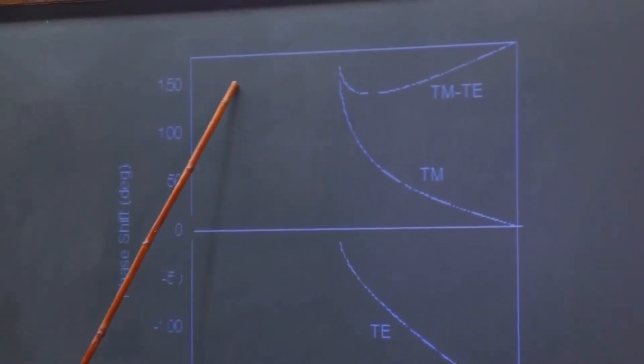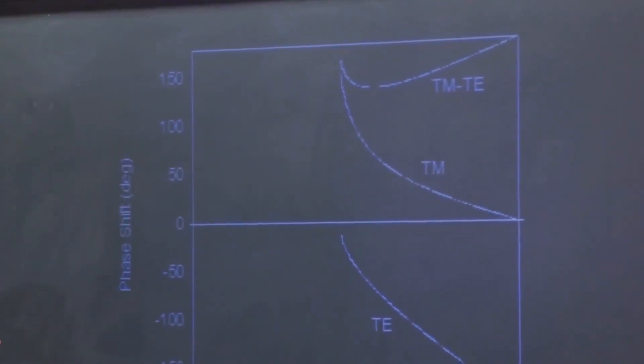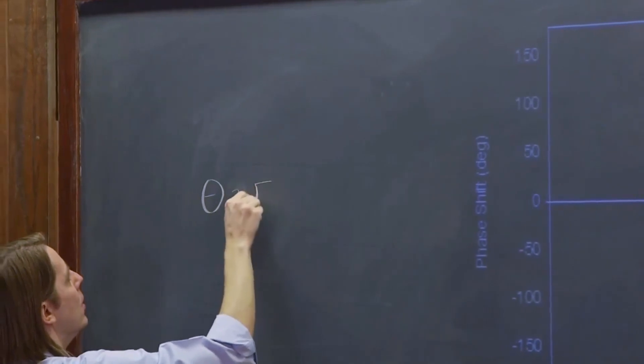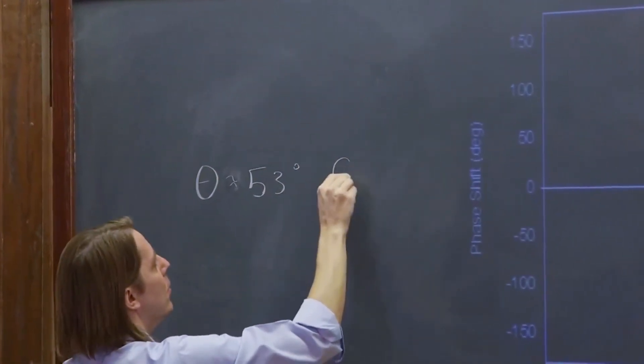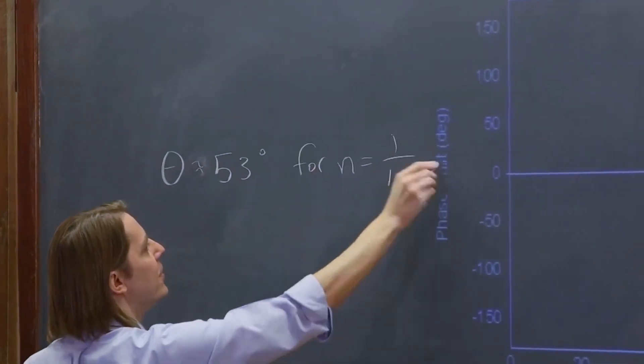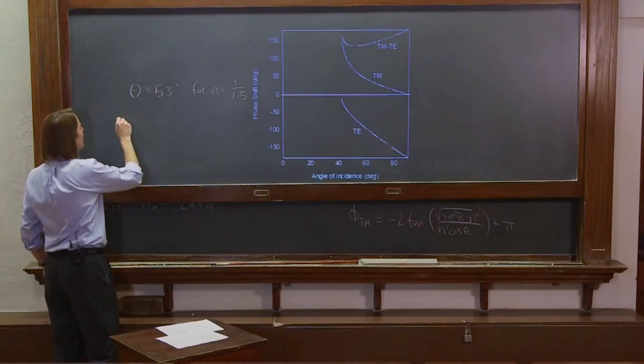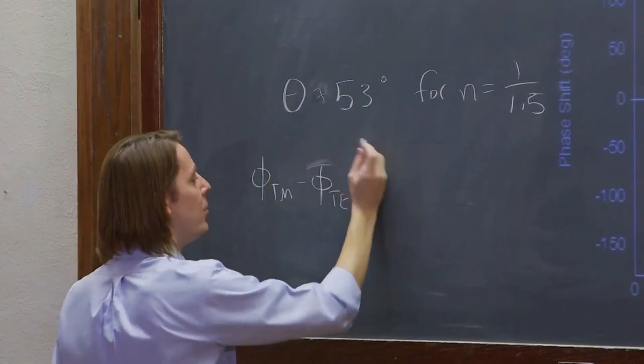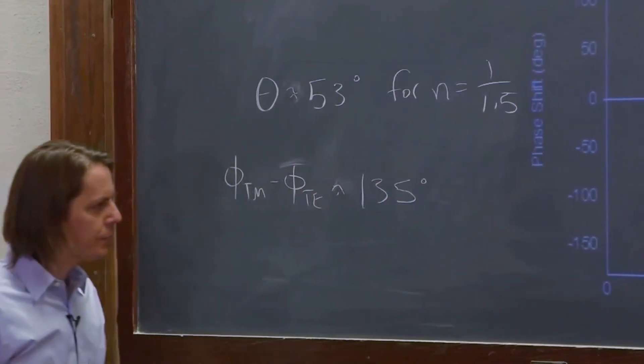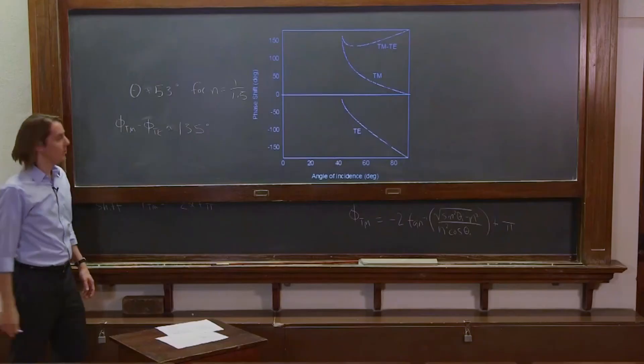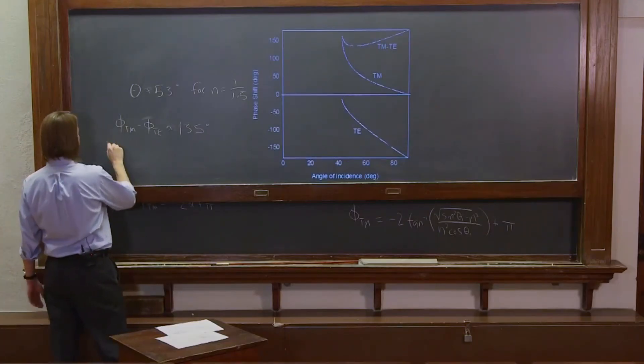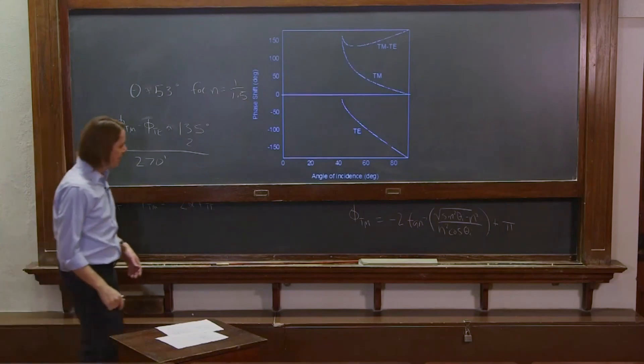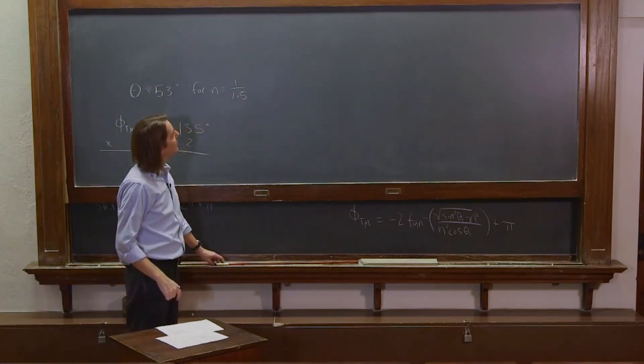And it goes through a very special point at about 53 degrees. Right there, it goes about there. And that's at about 135. OK, so theta equals about 53 degrees for n equals 1 over 1.5, basically at the glass air interface. Phi TM minus phi TE is about 135 degrees. Well, if you did two of those, you'd be at 270 degrees. You'd be pi over 2 out of phase, just negative. So you can actually make a device out of this thing. You can make something called the Fresnel rhomb.